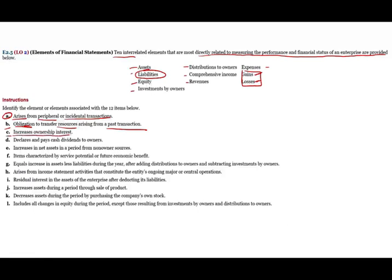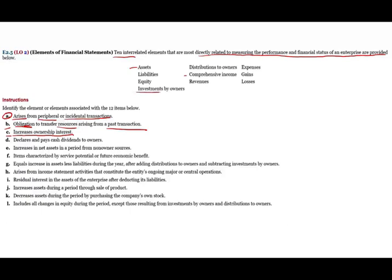C: increase ownership interest. How do you increase ownership interest? That means you own, for example, 5%, and that 5% goes from 5% to 7%. How can you increase your ownership interest? You have to make a contribution — you have to make an investment in the company. So what's the correct term here? Investment by owners. When you make investments, you increase your ownership, for example from 5% to 7%, if you contribute more money.